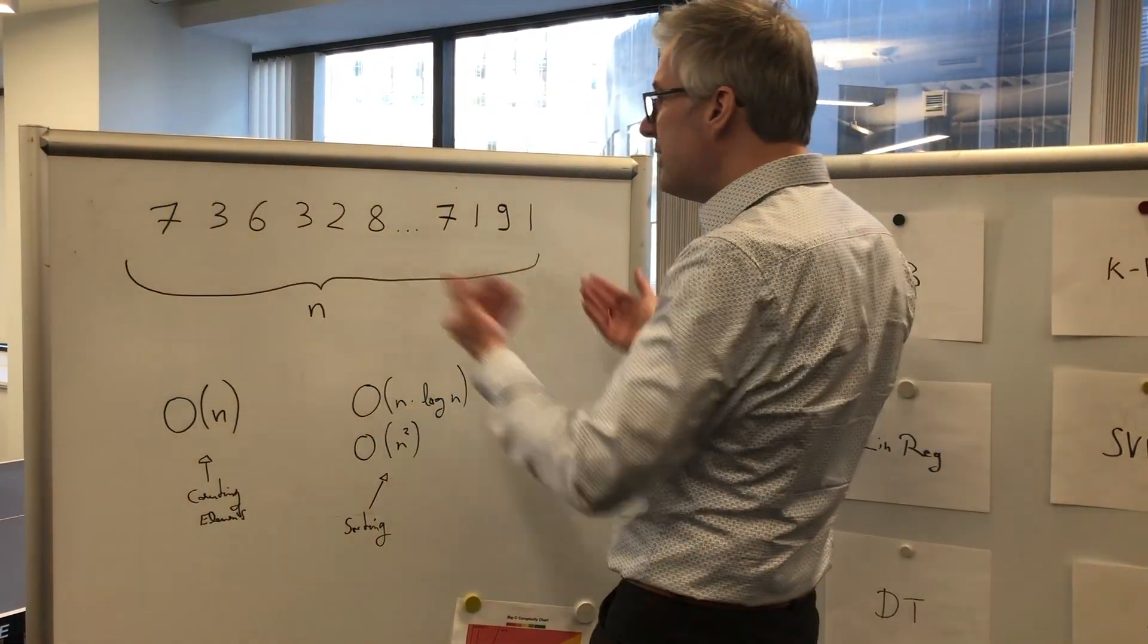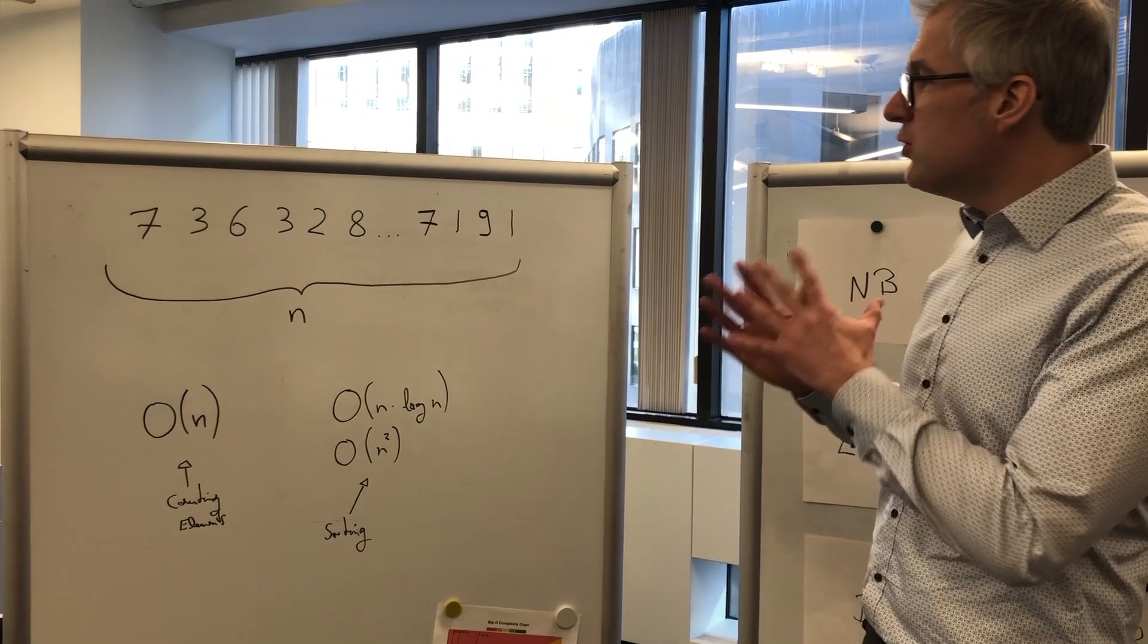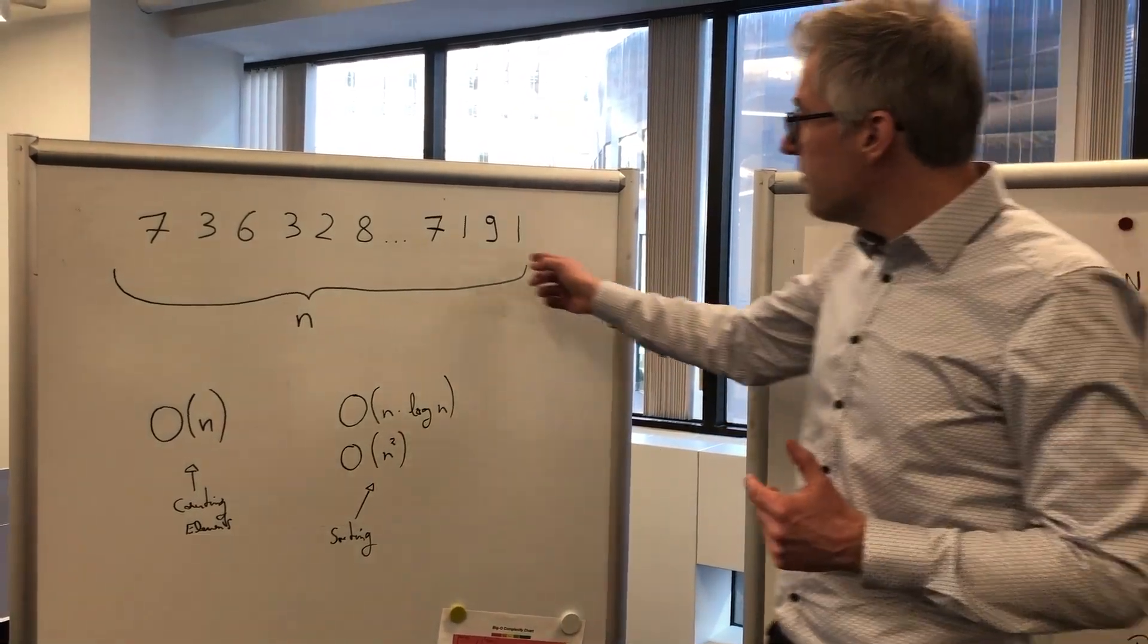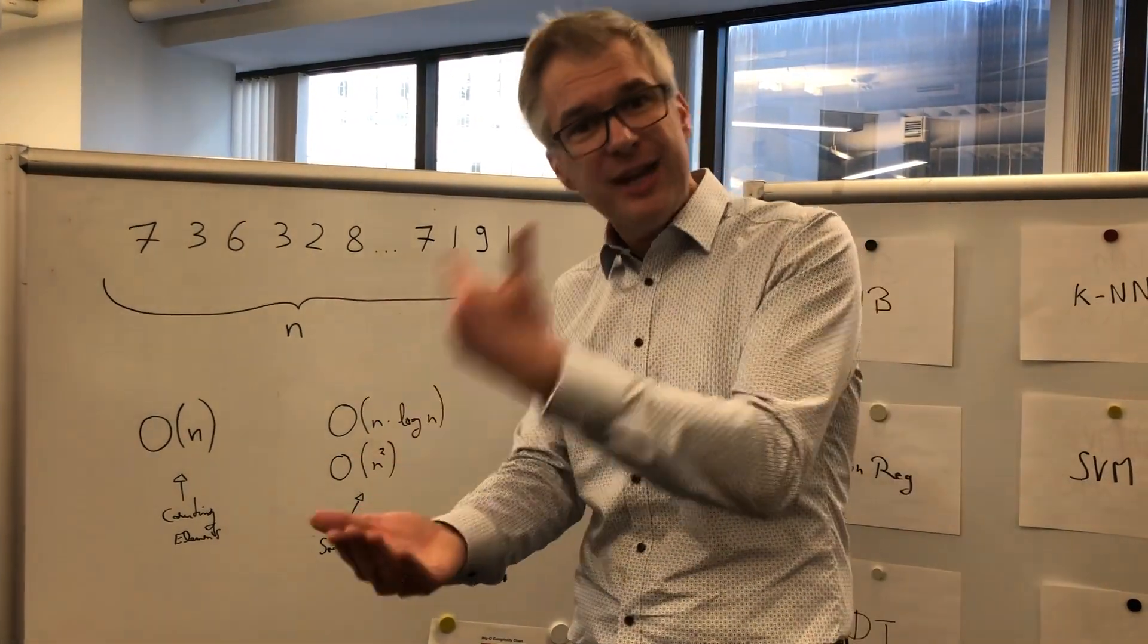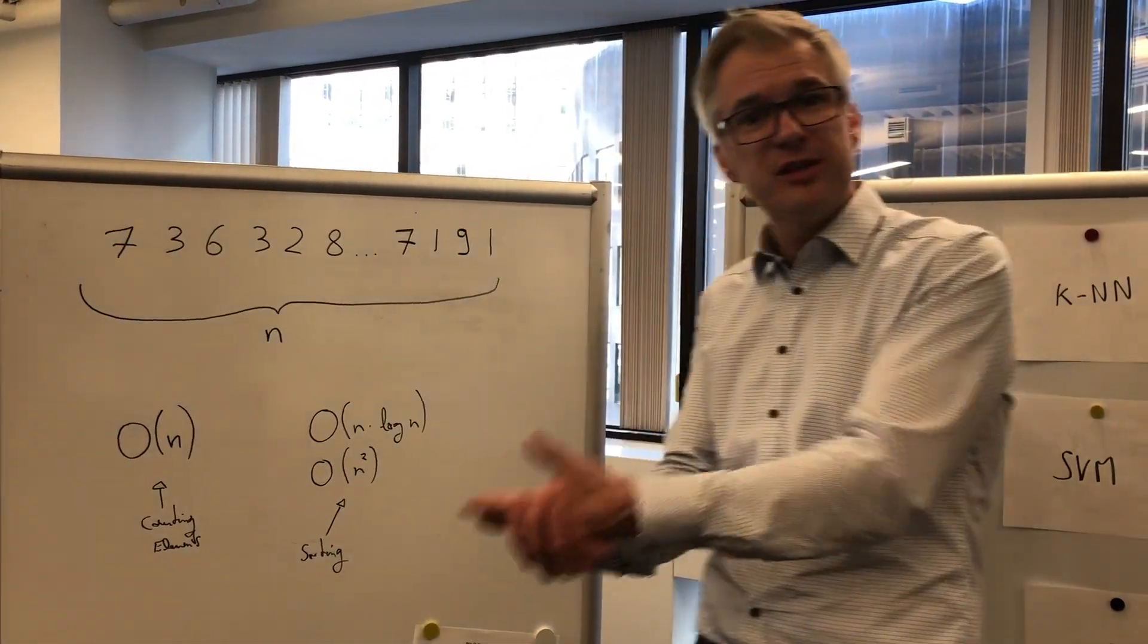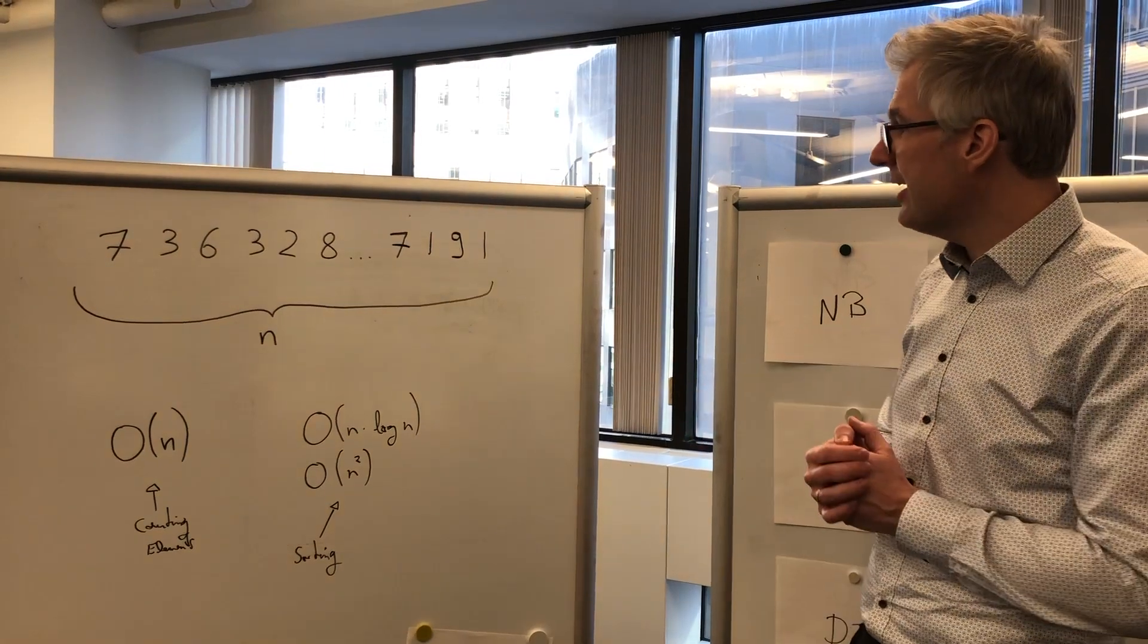How many numbers do I need to look up to determine how many 3s are in this sequence? Well, if I have n digits, I obviously need to do n different things - n checks. N times, I need to check if this number is a 3 or not, and if yes, I increment my count.